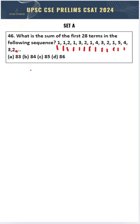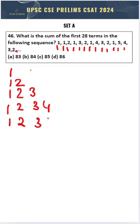So I can write it as such: 1, then 1, 2, then 1, 2, 3, then 1, 2, 3, 4, then 1, 2, 3, 4, 5, and so on until I reach 28 terms.